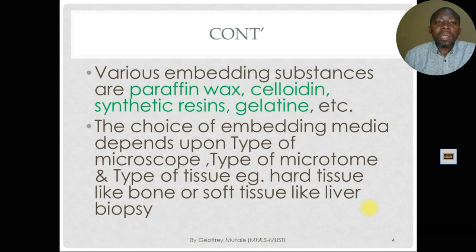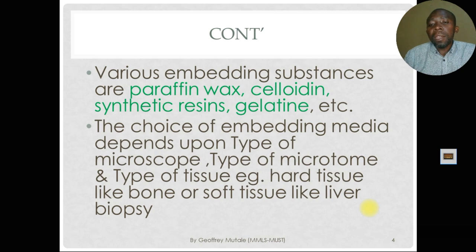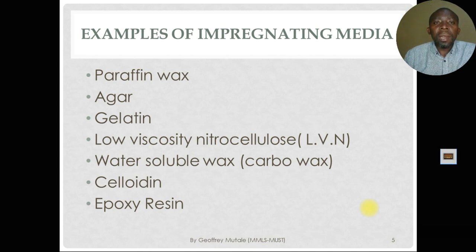Various embedding substances are used: paraffin wax, which is commonly used in most labs; celloidin; synthetic resin; gelatin; and many others. The choice of embedding media depends on the type of microscope to be used — for example, the electron microscope requires different embedding media compared to the light microscope, where paraffin wax is preferred. The type of microtome and the type of tissue — whether hard tissues like bones or soft tissues like liver — also determine which embedding medium to use.